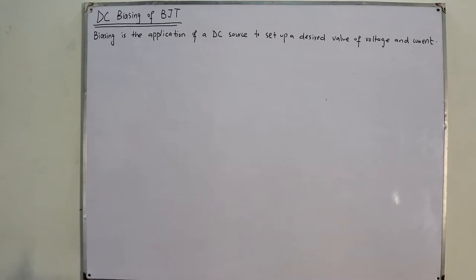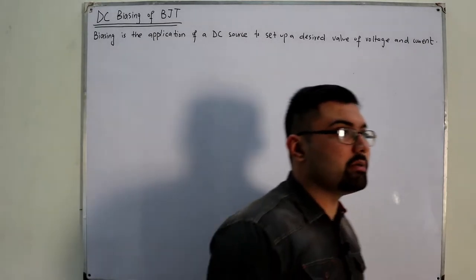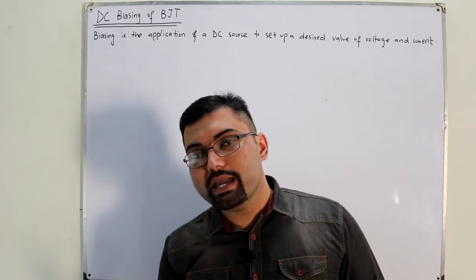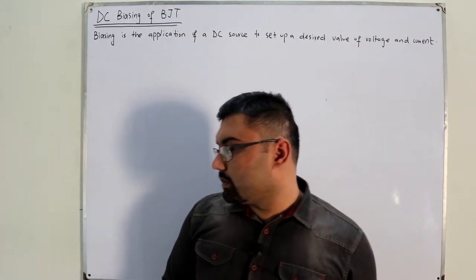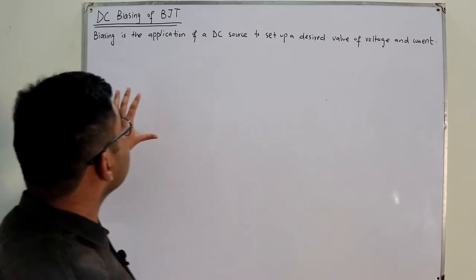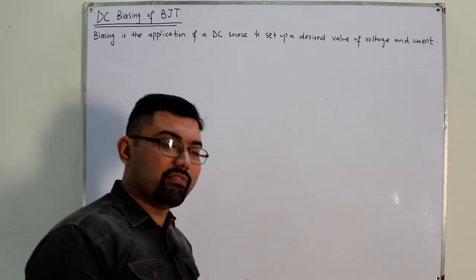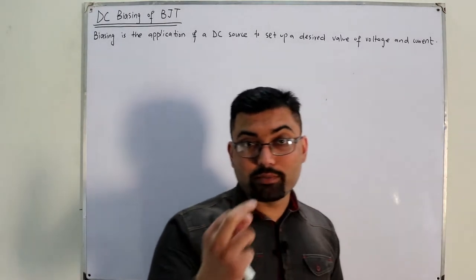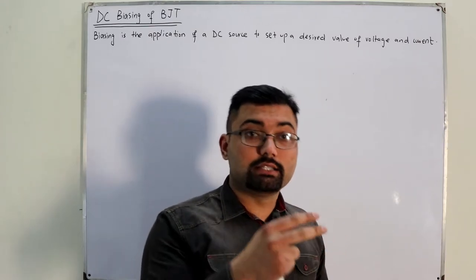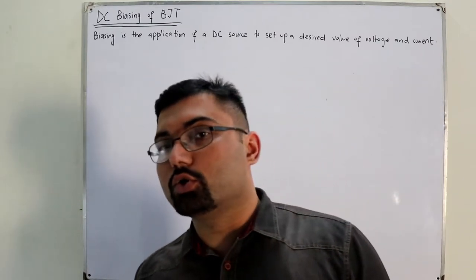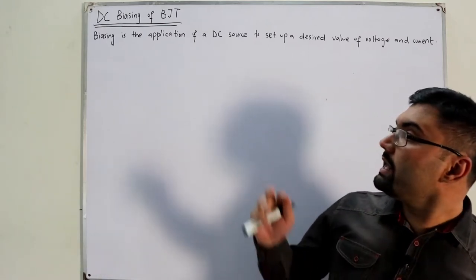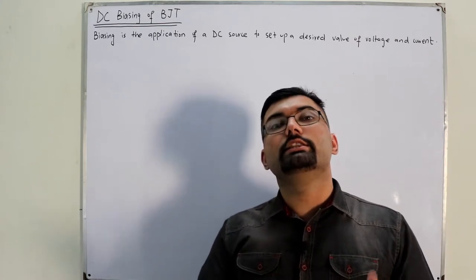BJT is the bipolar junction transistor — a three-terminal device. It may be NPN or PNP. The three terminals are collector, base, and emitter. The main applications of the BJT are either as an amplifier or as a switch. The switch is from the digital electronics point of view. In analog electronics, we are interested in the BJT as an amplifier, which operates in the active mode.